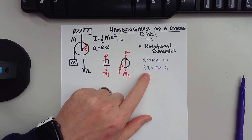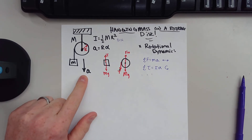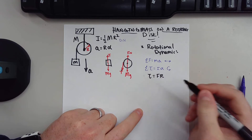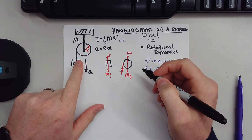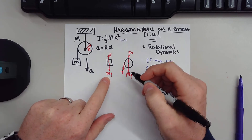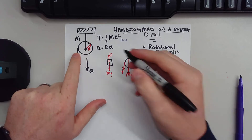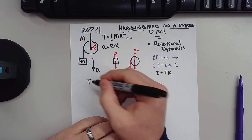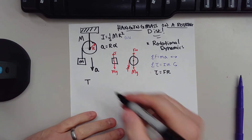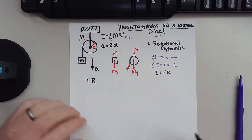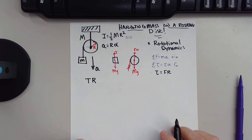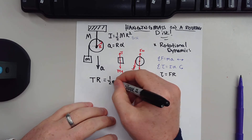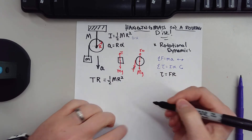We're going to use this to solve for our translational acceleration. Torque in physics is just force times radius. What's causing a torque on this system? It's the mg of the little block, producing a force about a radius. So we have a tension T acting over radius R. That tension times R equals I — which in this case is one-half big M R squared — times alpha.